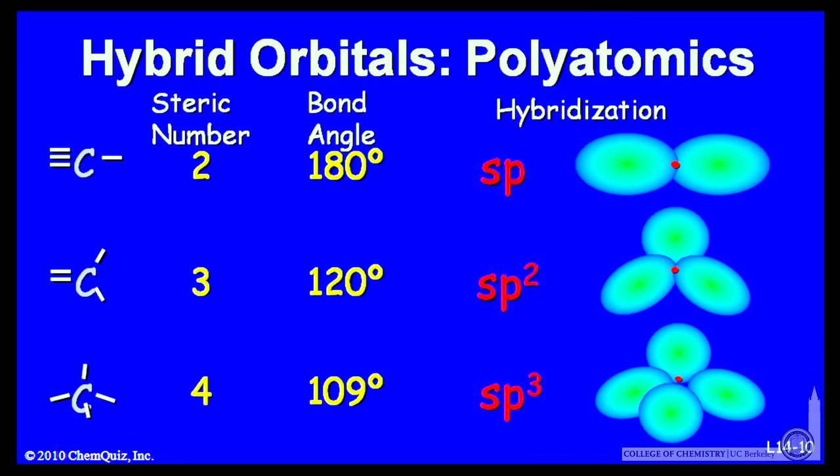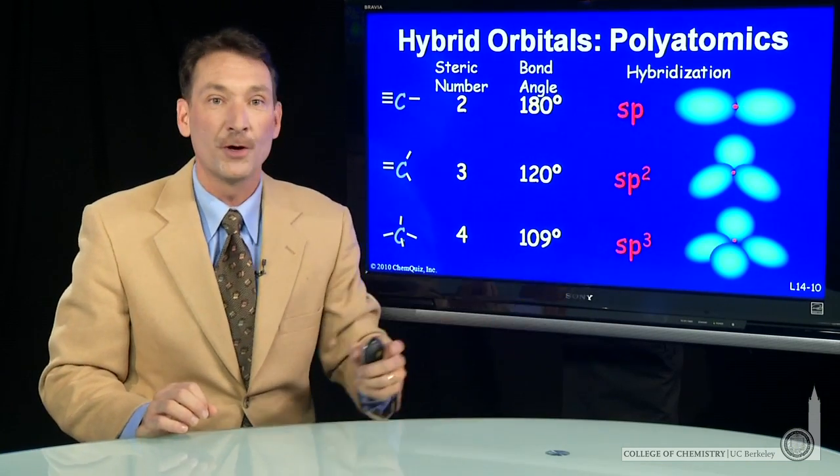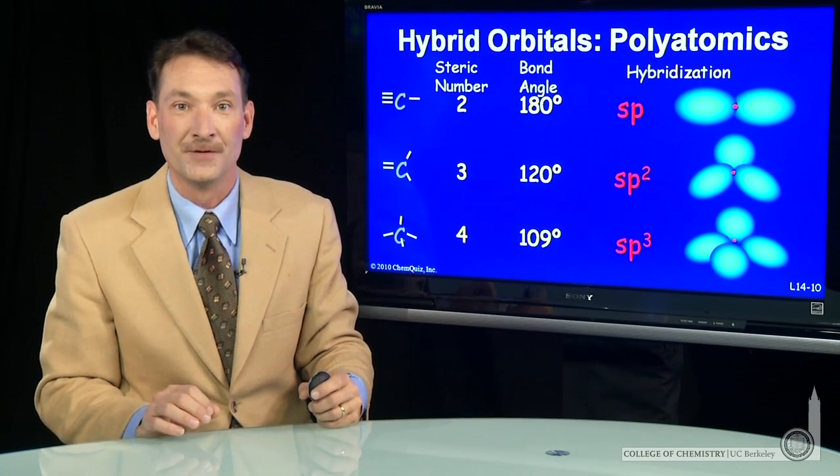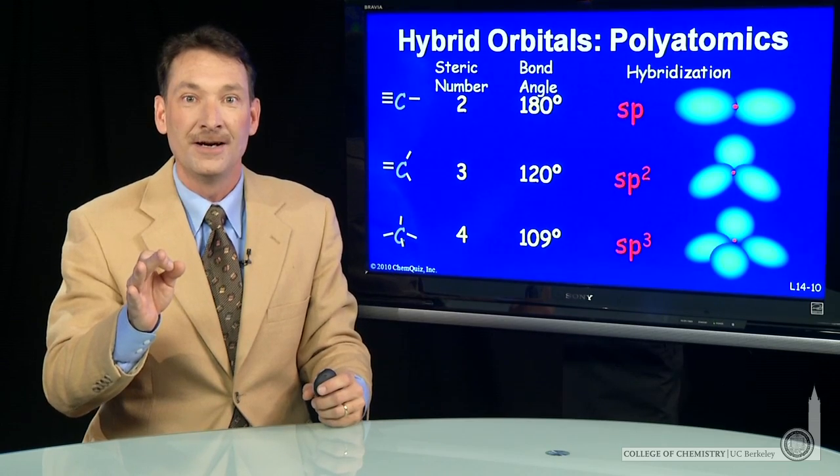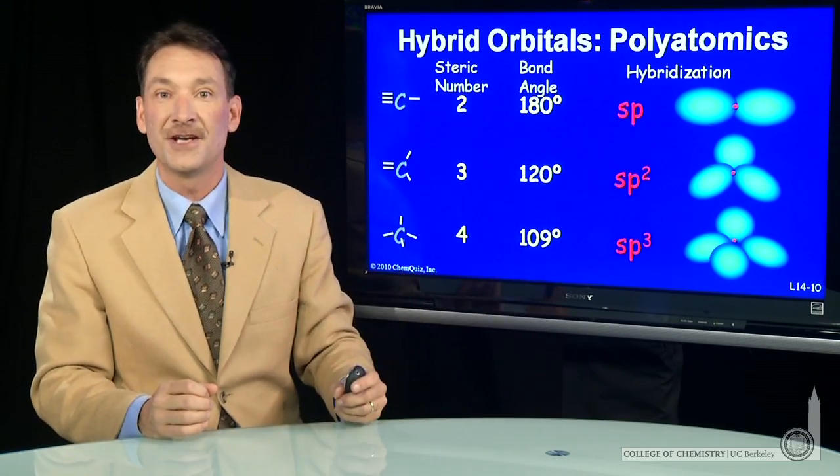For steric number four, I'll hybridize together S and three P's, making four equivalent SP³ hybrid orbitals. They point toward the vertices of a tetrahedron. So hybridization allows us to accommodate the geometry for various steric numbers.